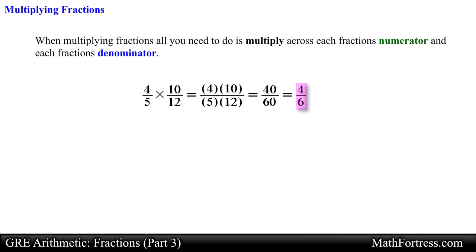This fraction can be further reduced since both 4 and 6 are even, meaning that they have 2 as a common factor. So we go ahead and divide both numerator and denominator by 2. Doing that yields the final answer equal to 2 thirds. Always reduce a fraction whenever possible.